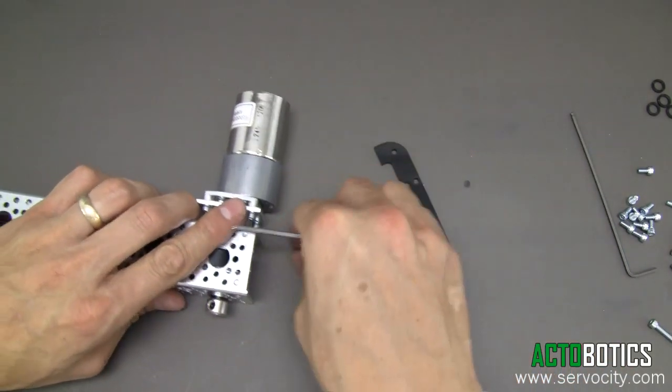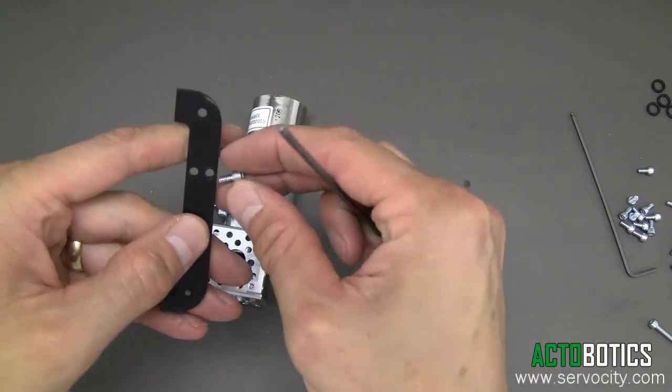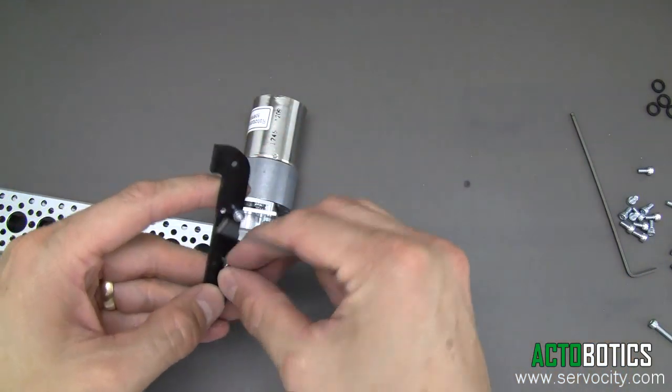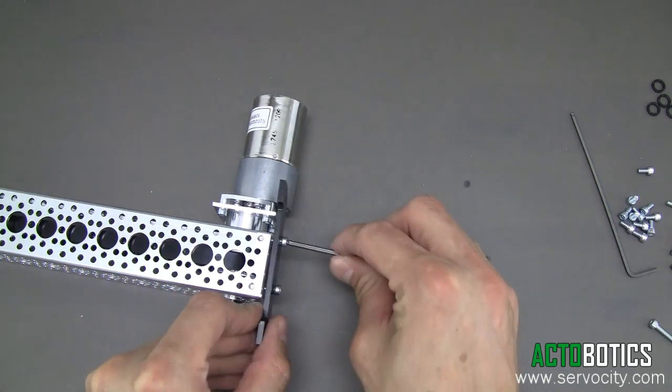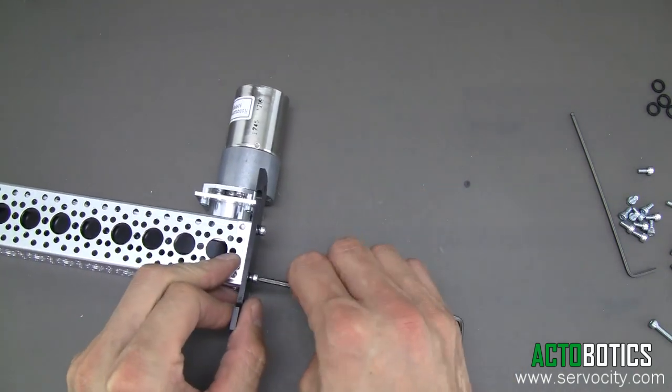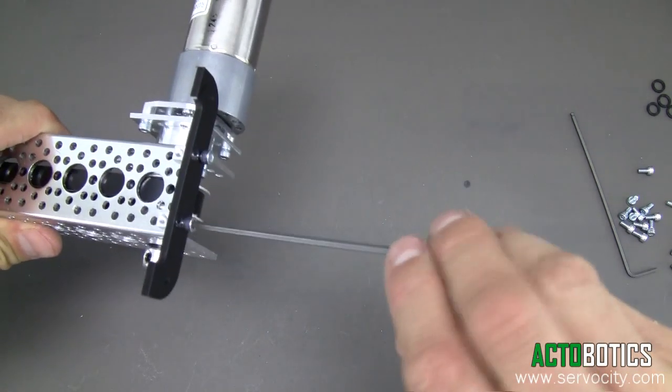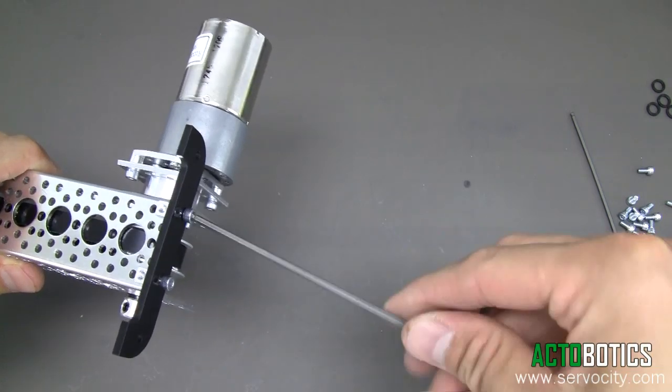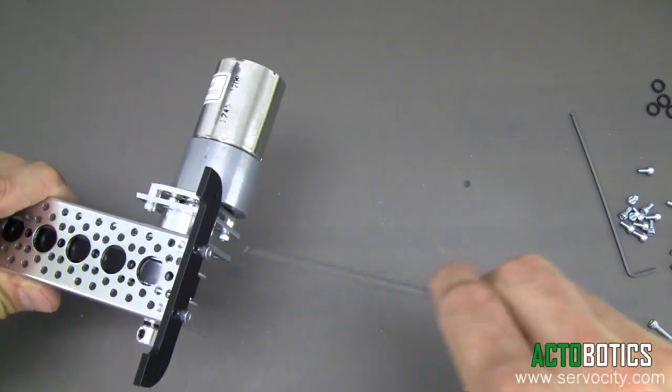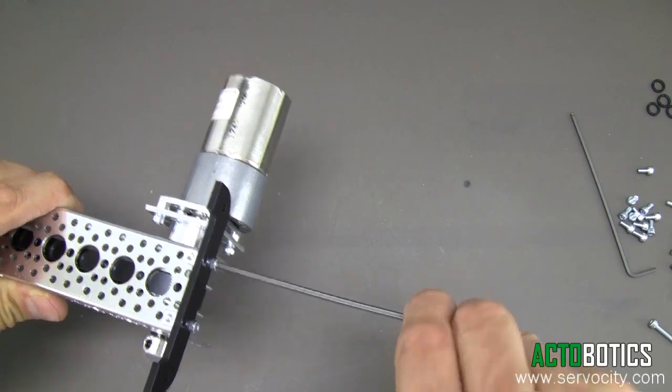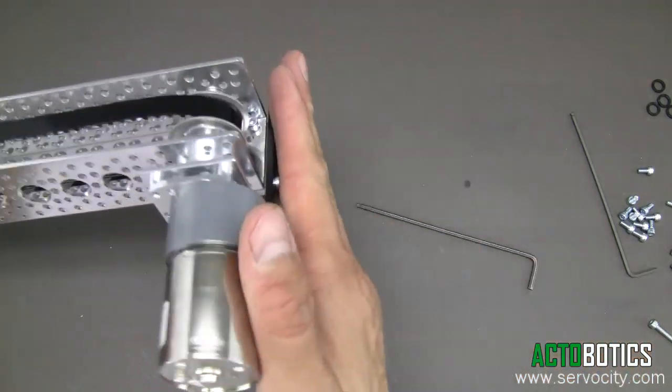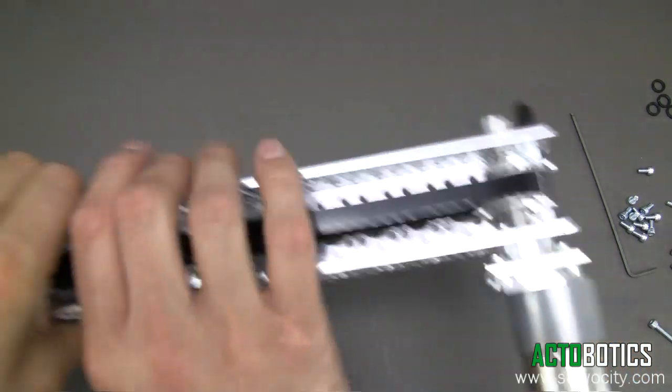And now we're going to attach the last foot here. Obviously we want to use the top screws here. Both of those in. There we go. We'll go ahead and tighten this down just like that. Double check them here. And there you go. So now both feet are on.